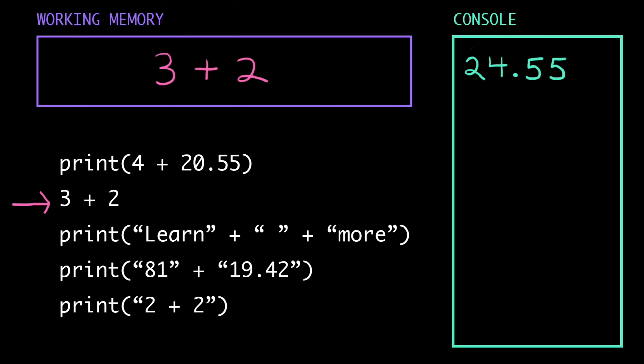Now the computer loads the second line into its working memory. And again, it looks for any expressions to evaluate. It sees the expression 3 plus 2, and it simplifies that down to the integer 5. Notice that there's no print instruction here. We didn't actually ask the computer to do anything with that value. So the computer is thinking, I just did all this work, I figured out the answer is 5, but I guess you don't want me to tell you. So it shrugs, whatever, and it clears its working memory out, forgets that 5, and just moves on.